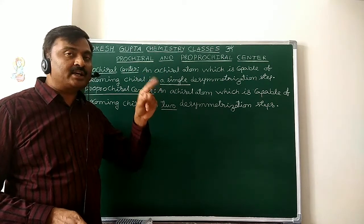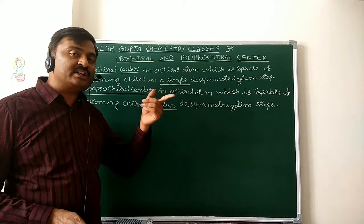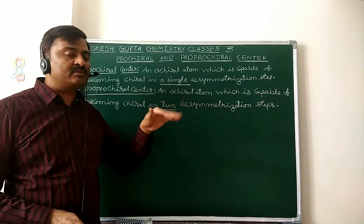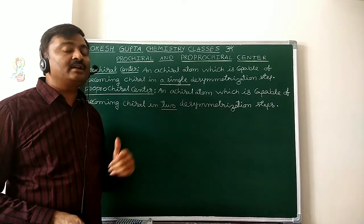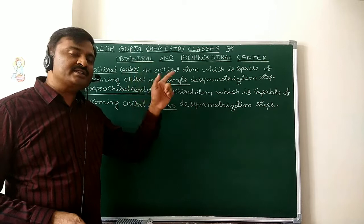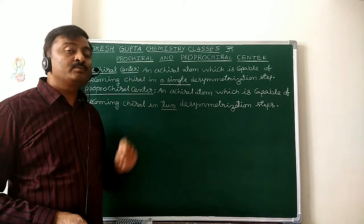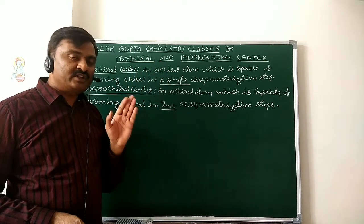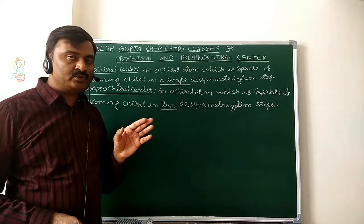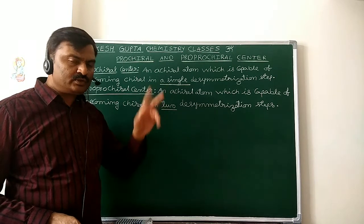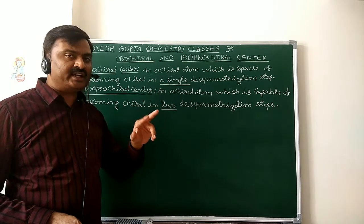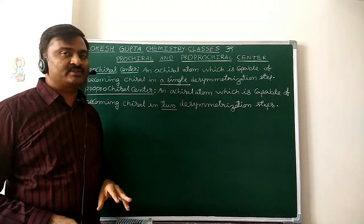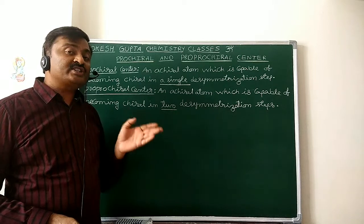Among those two identical atoms, if you substitute one with a new different atom, it becomes chiral. That is called Pro Chiral. So, a Pro Chiral center will be attached to two different atoms and the remaining two are identical atoms.